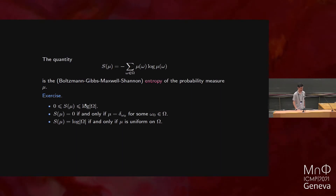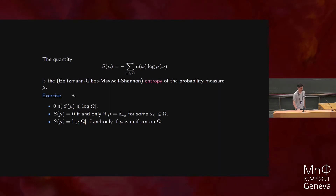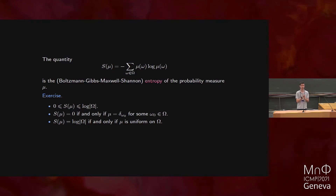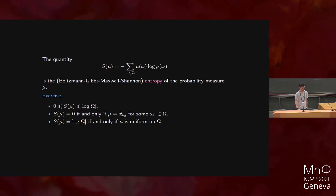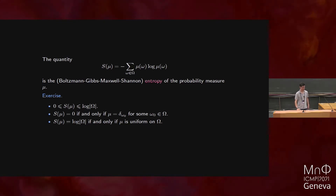First of all, it's positive. Secondly, it's bounded from above by the entropy of the uniform distribution. Moreover, this entropy is equal to zero if and only if your state has no disorder at all — in other words, your probability measure is fully concentrated at a single site omega, a Dirac delta function. And secondly, it equals its maximal value if and only if the thing is as disordered as possible — if it's the uniform distribution on omega.